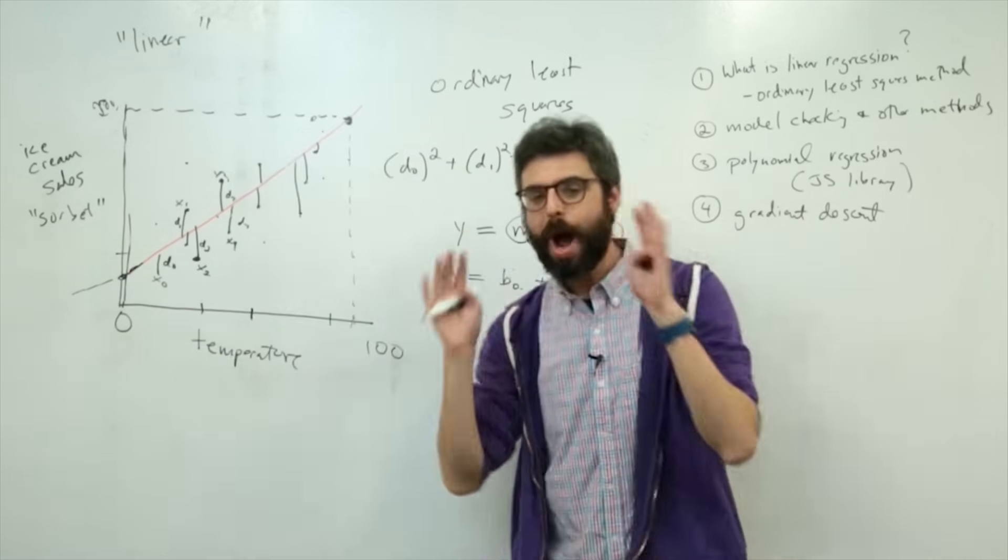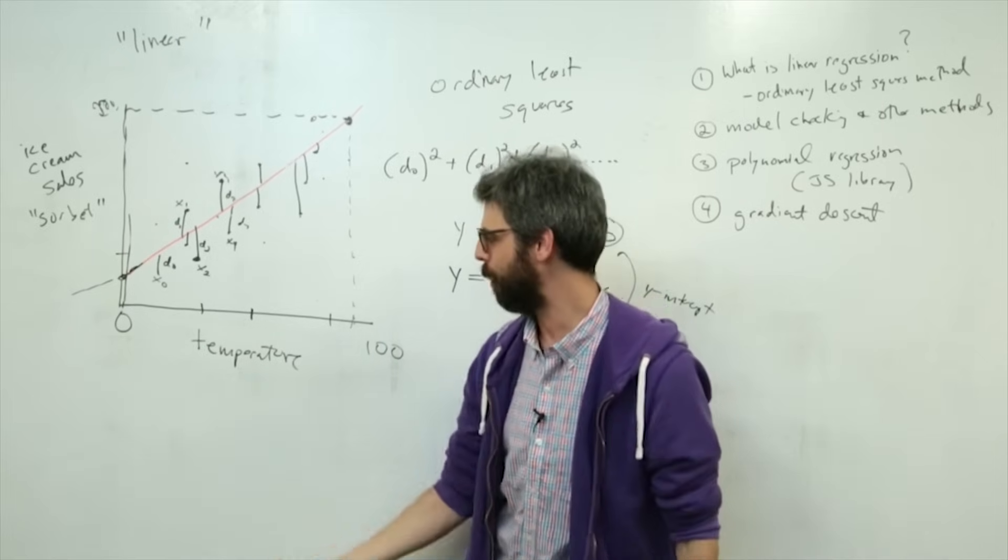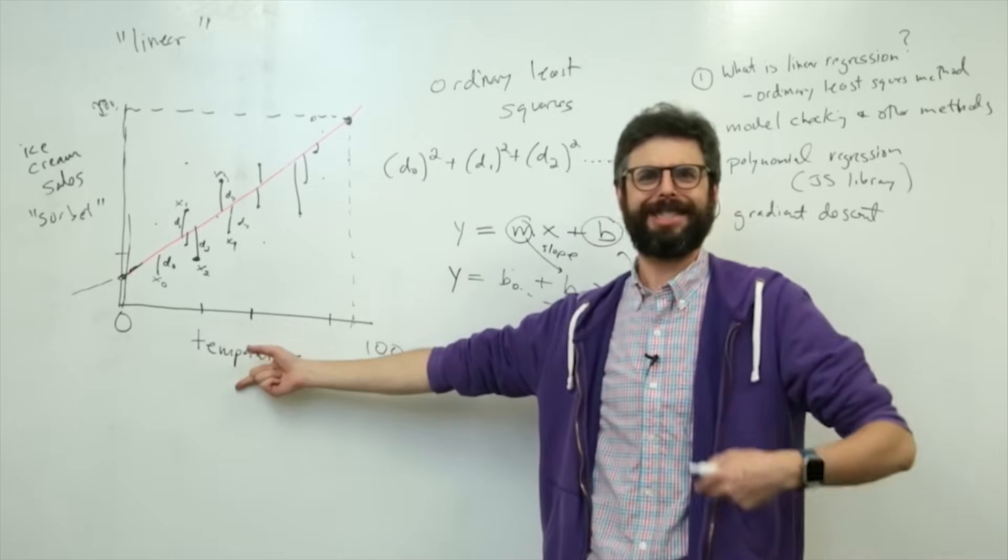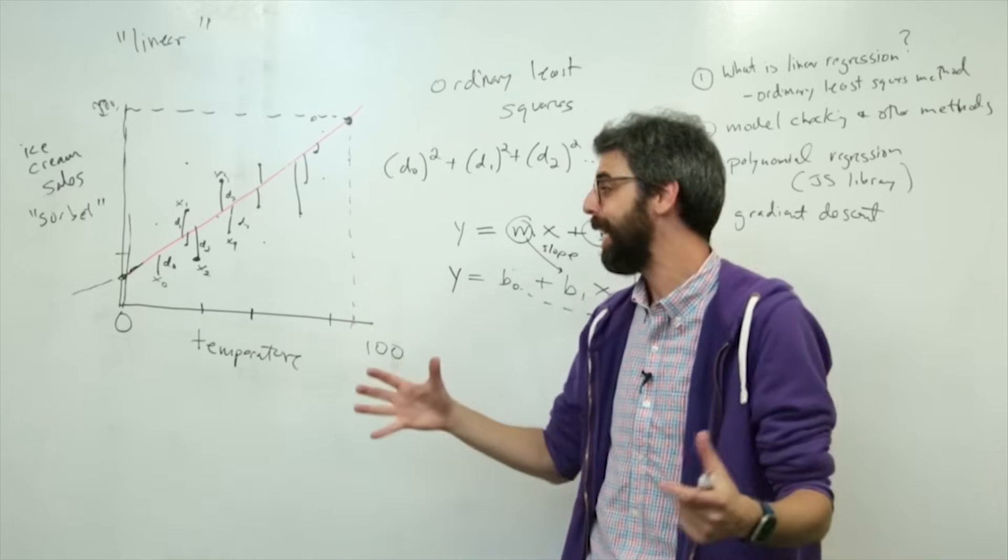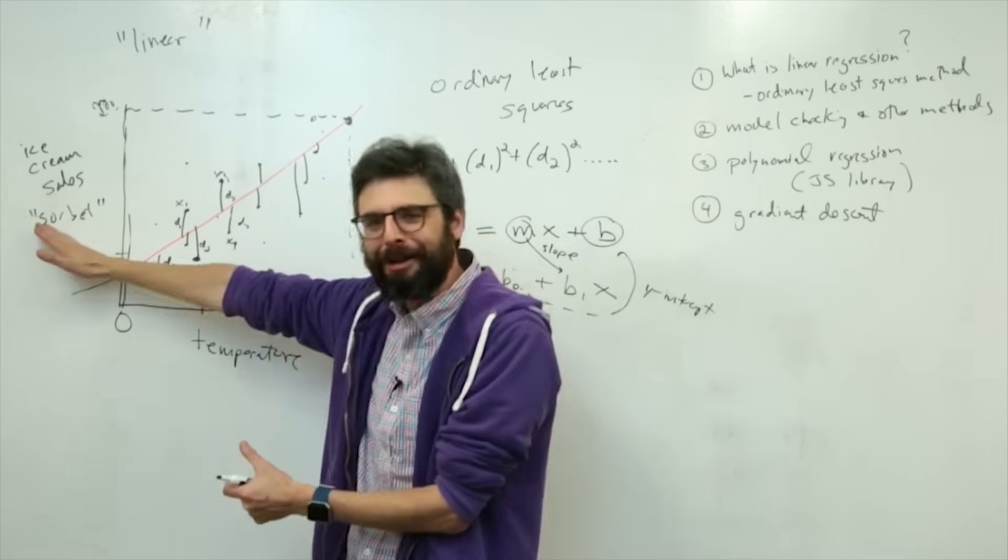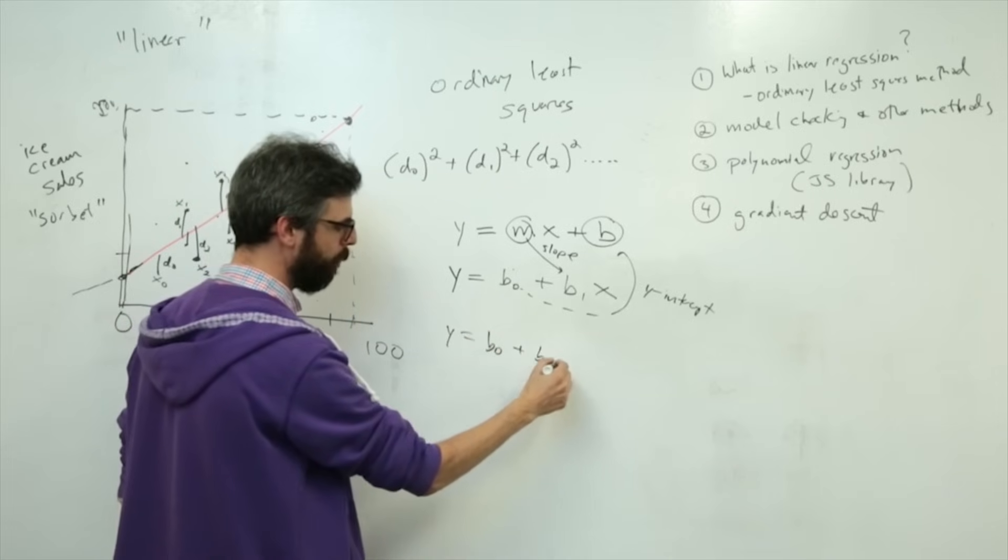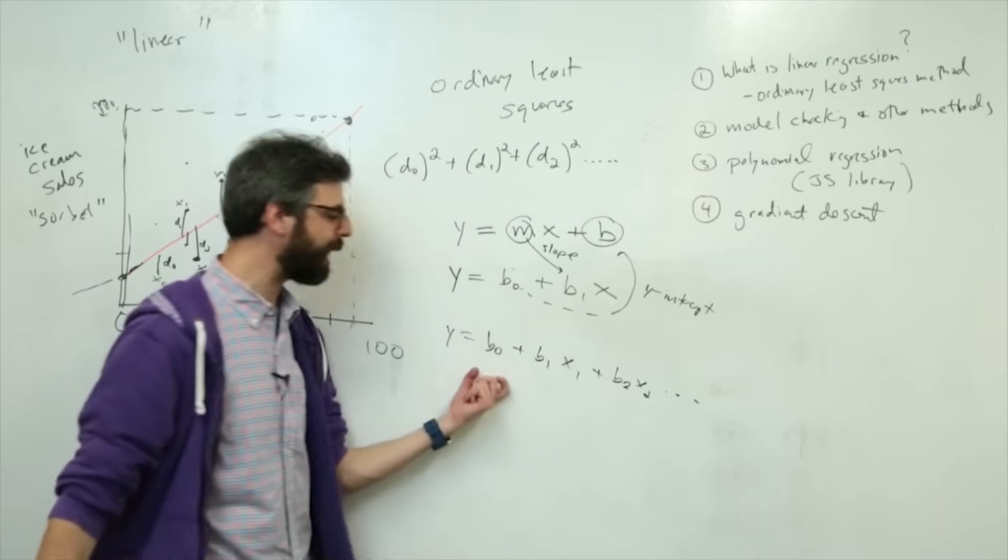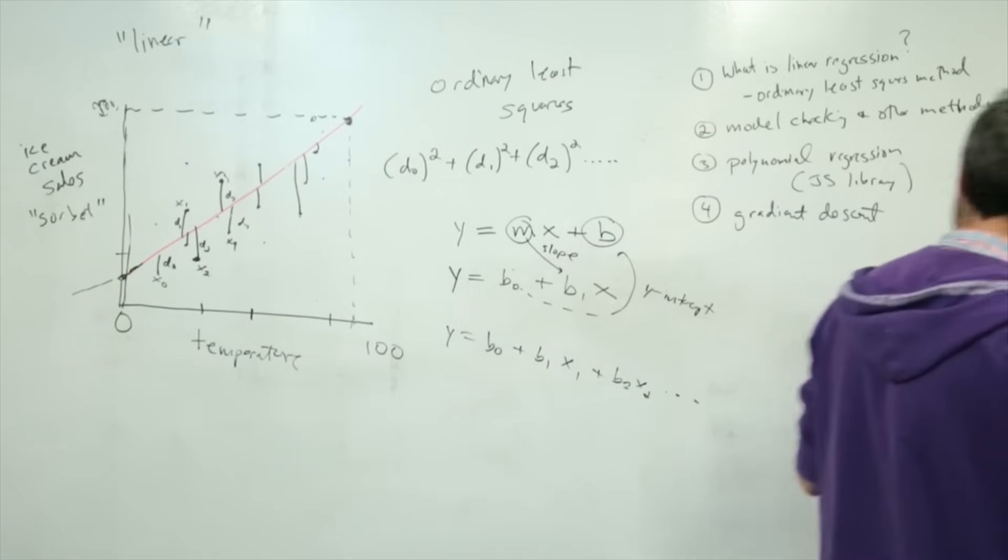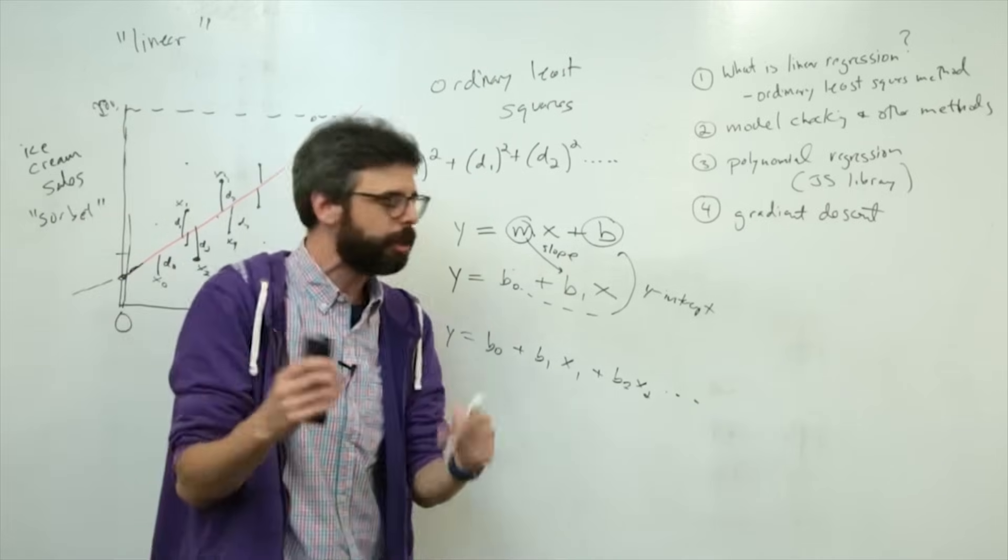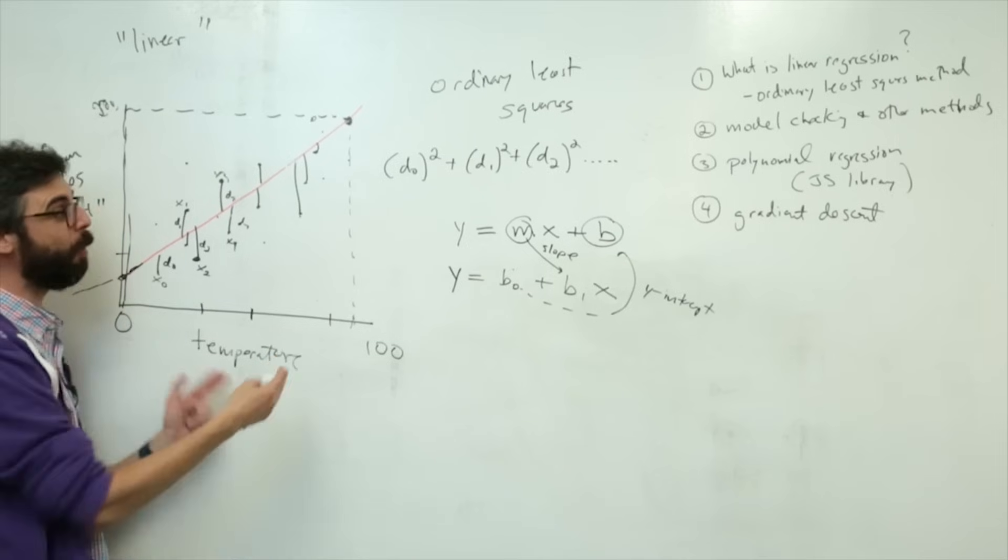So all we need to do is we need to calculate m and b. So here's the thing. Most datasets that you might work with aren't just simple 2D datasets. There might be, you know, there's temperature, there's population of the city that the store is in, maybe there's the hours that it's open. You could think of all sorts of other data inputs that might relate to the sale of ice cream. And this can actually be generalized much, this could be y equals b0 plus b1 times x1 plus b2 times x2. So there could actually be multiple linear, this is referred to as multiple linear regression. And generally, the same math that I'm going to show you applies to this scenario. But it typically involves matrix-based calculations. Maybe I'll do that in a different video. But we're going to, it's simpler to look at in just this context with just one input.